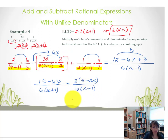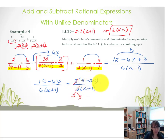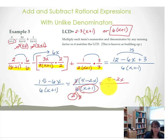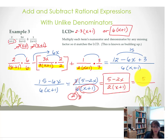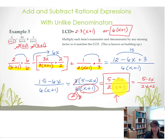We can reduce something here: 6 is the same as 2 times 3, so we have a factor of 3 in common. These quantities are not identical though, so they are not going to reduce. We have 5 minus 2x in the numerator and 2 times the quantity x plus 1 in the denominator — that's our final answer. If you choose to distribute, it's also acceptable to write 5 minus 2x over 2x plus 2. But we tend to prefer the factored form because it reveals if any more reducing could be done.